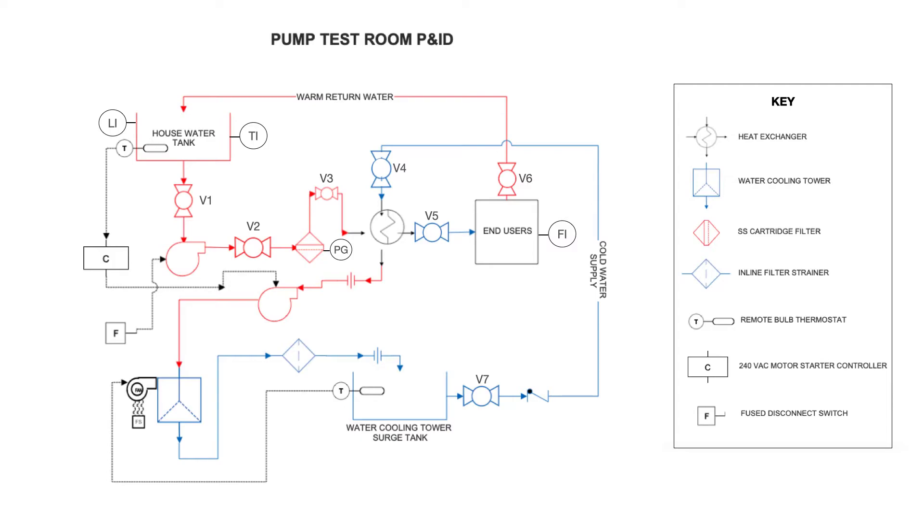And then you can also see there is a level indicator on the house water tank as well as a temperature indicator on the house water tank. And the key to the right shows you what all these different symbols mean.